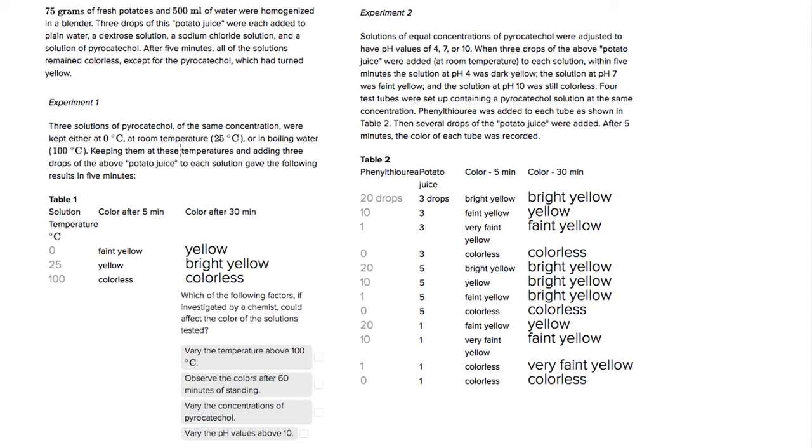Let's look at our answer choices and it's going to be pretty simple once we look at our choices. Our first choice says to vary the temperature above 100 degrees Celsius. In experiment one, we're looking at the solution at three different temperatures: 0, 25, and 100.